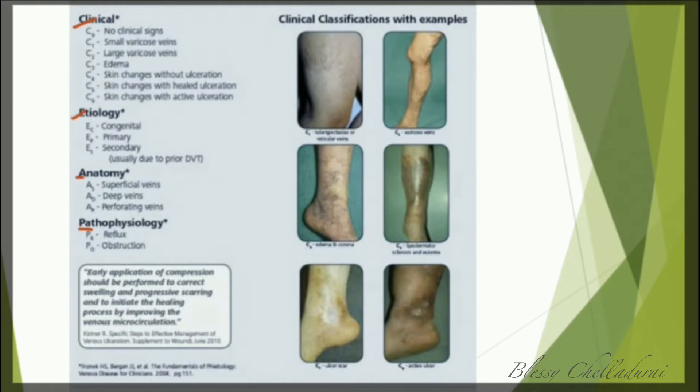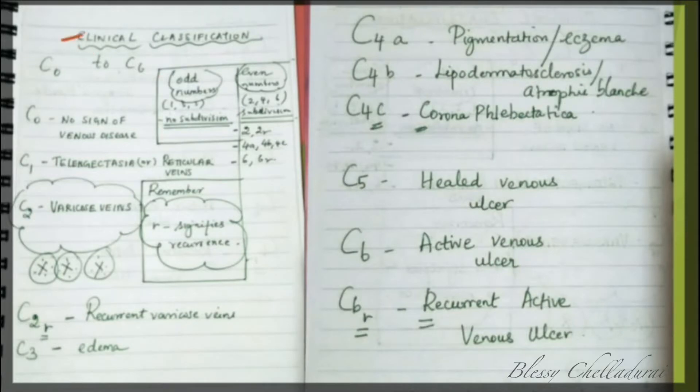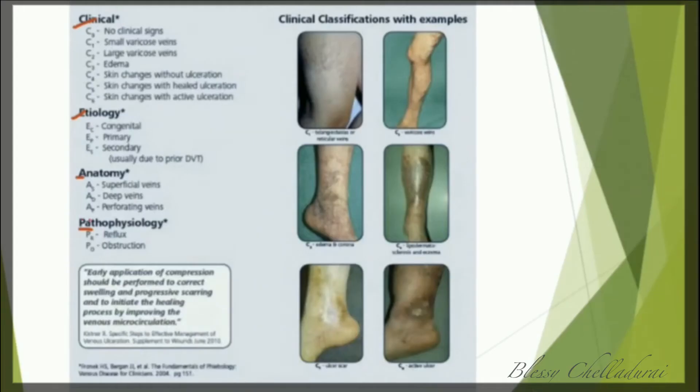In the CEAP classification, C stands for clinical, E is for etiology, A for anatomy, and P for pathophysiology. So we have a clinical classification, an etiological classification, an anatomical classification, and a pathophysiological classification.